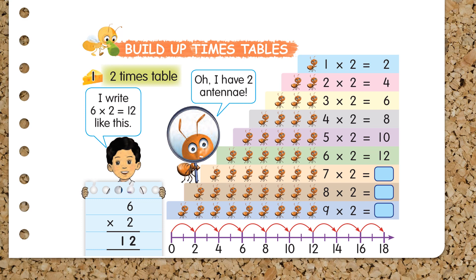Now let us see 2 times table. 1 times 2 is 2, 2 times 2 is 4, 3 times 2 is 6, 4 times 2 is 8, 5 times 2 is 10, 6 times 2 is 12, 7 times 2 is 14.